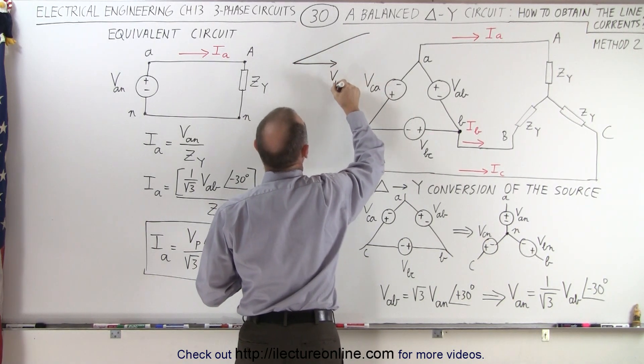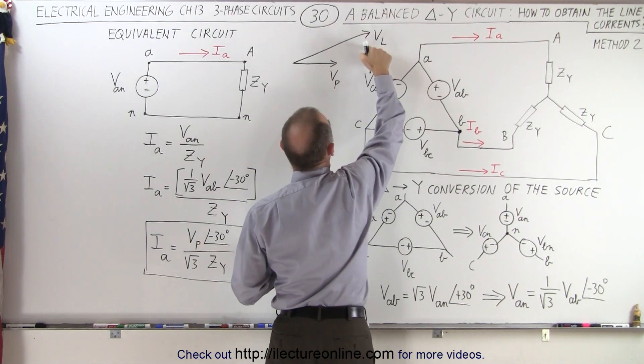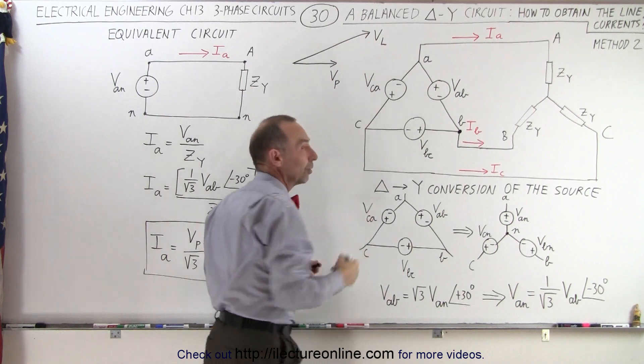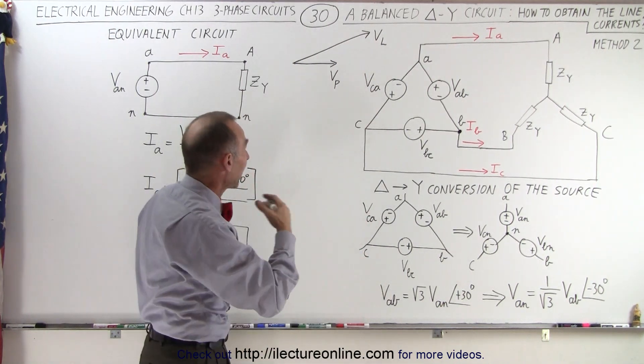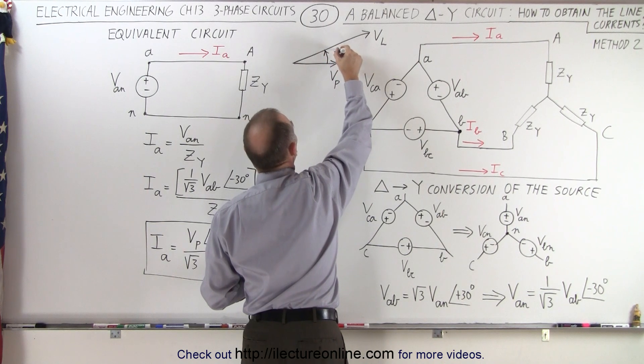...there's the phase voltage, so this is Vphase, this is Vline. We know that Vline has a larger magnitude, the square root of 3 times the magnitude of the phase voltage, and a positive phase difference of plus 30 degrees.